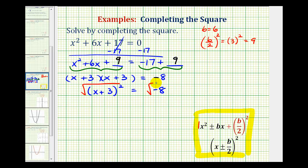And now, when we simplify the left side, this will simplify to one factor of x plus 3. And on the right side, we need to simplify the square root of negative 8. Let's take a look at that over here.